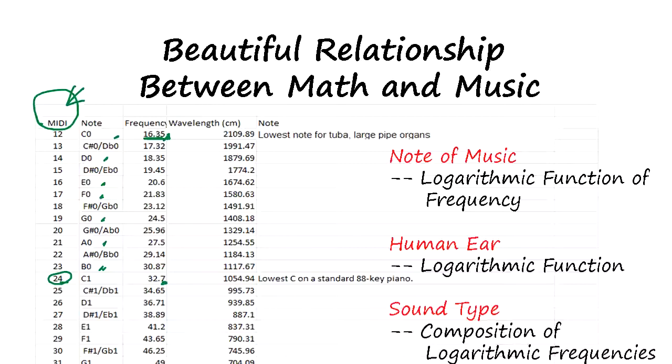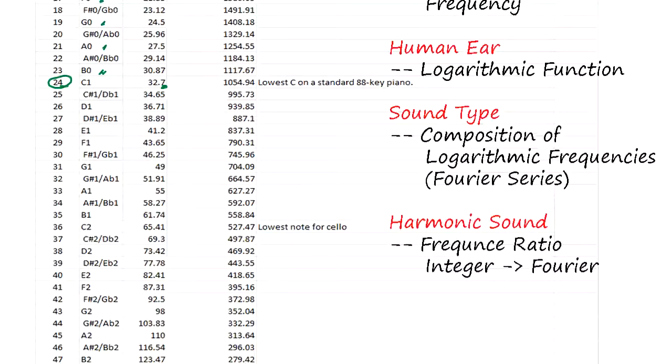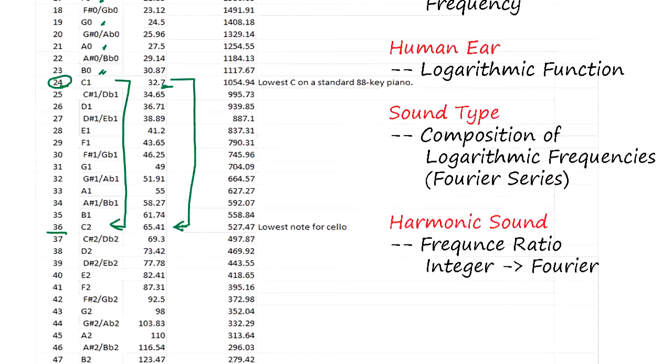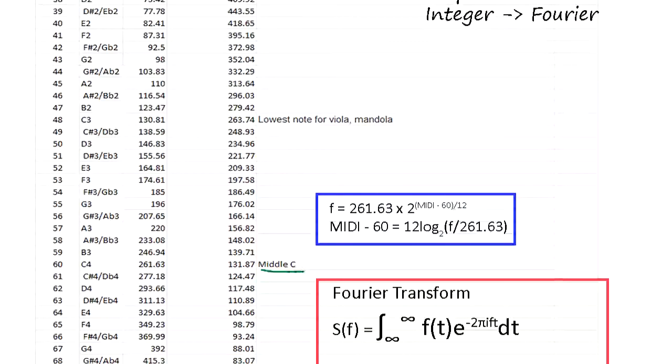Going upward, the C repeats. And each time, frequency is doubled. It's not frequency linearly increasing, it's doubled every time. Let's try to make the sound. Middle C, so-called middle C, is 261 hertz, C4. MIDI number is 60. Let's hear this sound.